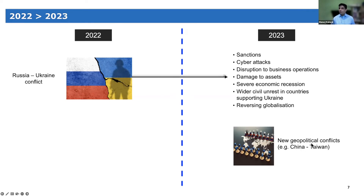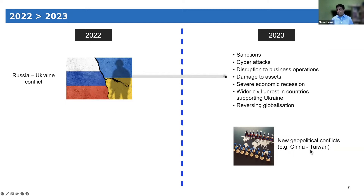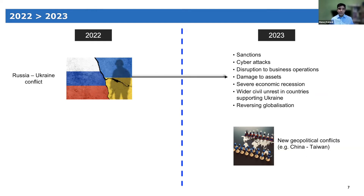There are also talks of new geopolitical conflicts that may start in 2023. The main one in geopolitical circles is the China-Taiwan conflict, which could be five to ten times more complicated and severe than the Russia-Ukraine conflict. Hopefully our political leaders avert that, but as operational risk management practitioners, we need to be aware that if it were to happen, some very extreme scenarios could unfold. It should be on our radar and we should be analyzing the potential impacts.